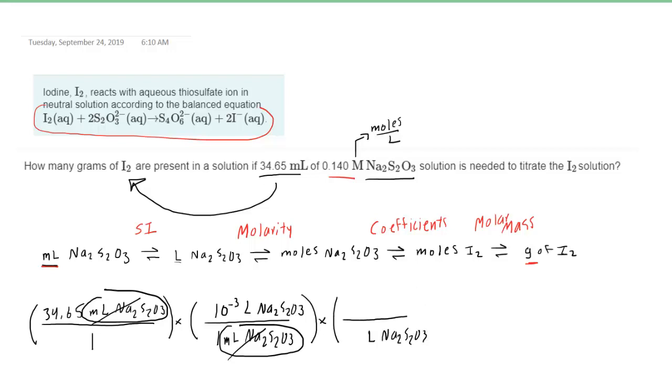And that way, the liters of Na2S2O3 will cancel with the liters of Na2S2O3. And as we just noted, one liter of that substance corresponds to 0.140 moles of that substance. We can go ahead and cancel out the liters.